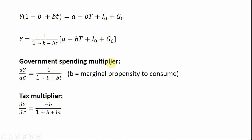The government spending multiplier is just the derivative of Y with respect to G. As before, the derivative of G is 1, and that's being multiplied by what's in front of the brackets — giving a slightly more complicated government spending multiplier due to the more complex tax system. The lump sum tax multiplier is the derivative of Y with respect to capital T. The derivative of minus B times T is just minus B, and that's multiplied by what's in front of the bracket.